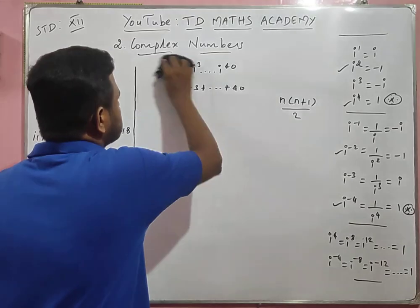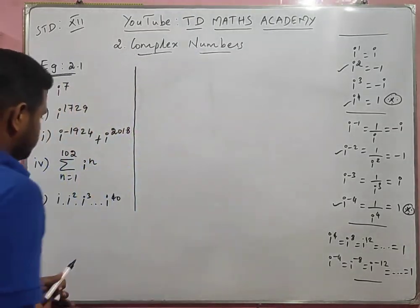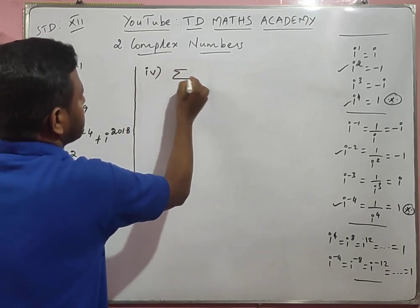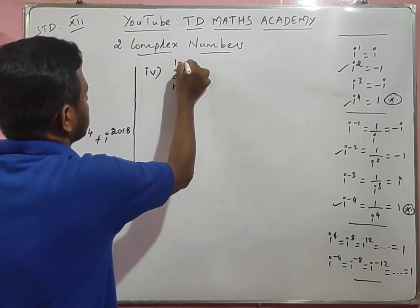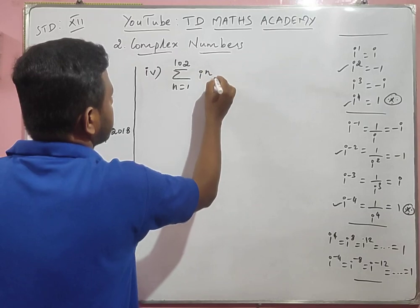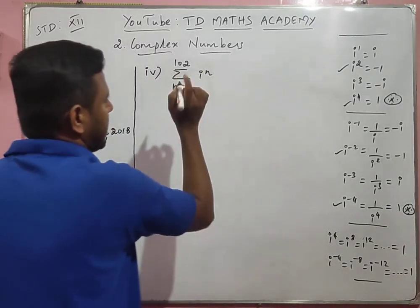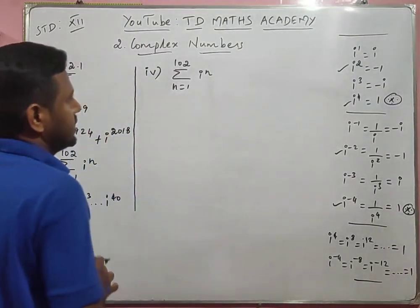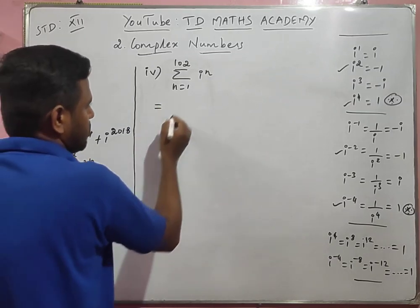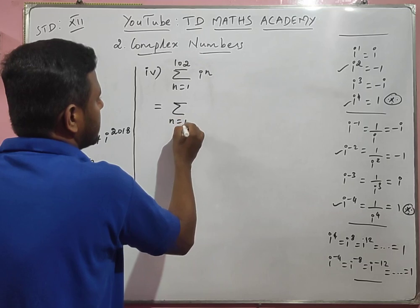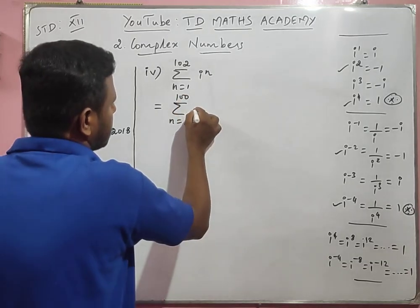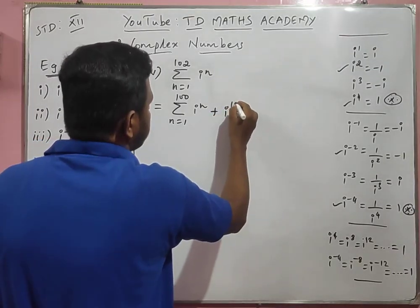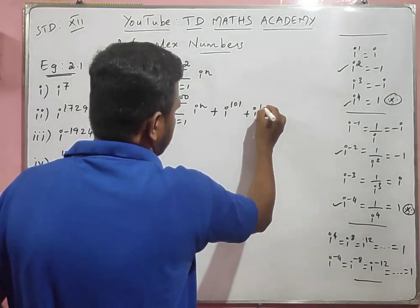Now the fourth sum (summation form). The summation of n equal to 1 to 102 of i power n. If you want 1 mark, the direct answer is that it equals the summation of n equal to 1 to 100 of i power n, plus i power 101 plus i power 102.